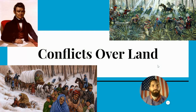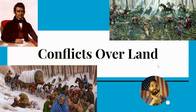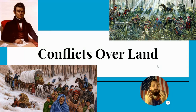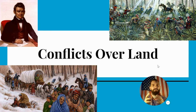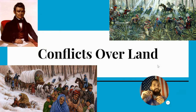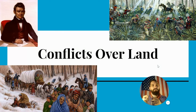Remember in 1824 we had the corrupt bargain. Jackson won the plurality of the votes, but he did not have a majority — meaning he didn't have over 50% of the electoral vote. Henry Clay, the Speaker of the House, used his influence to get the House of Representatives to vote for John Quincy Adams. In return, John Quincy Adams made Henry Clay the Secretary of State, which at that time would typically slingshot you up to the presidency down the road.